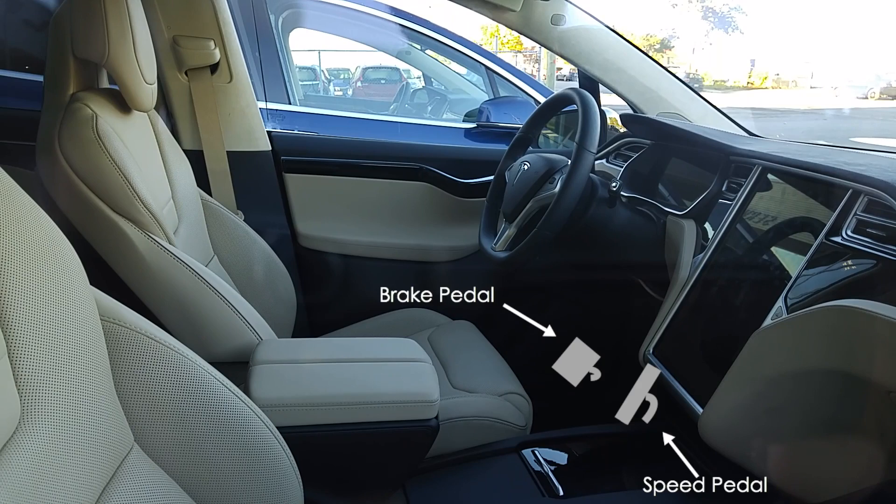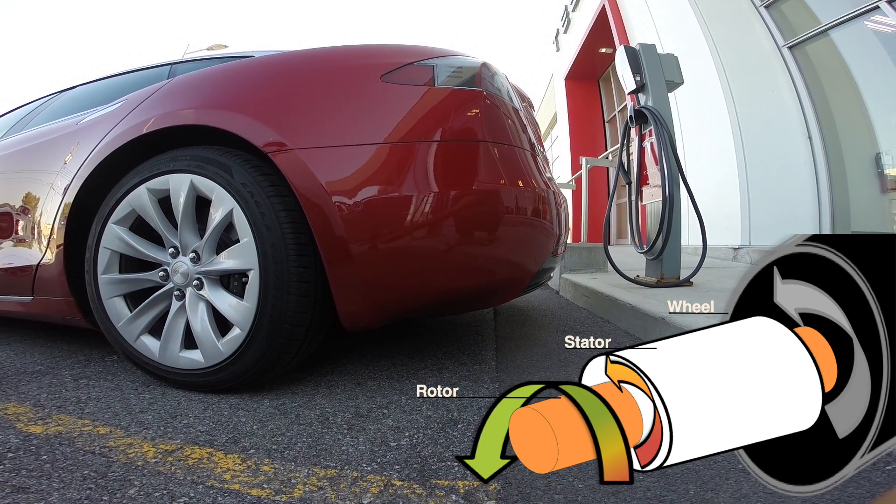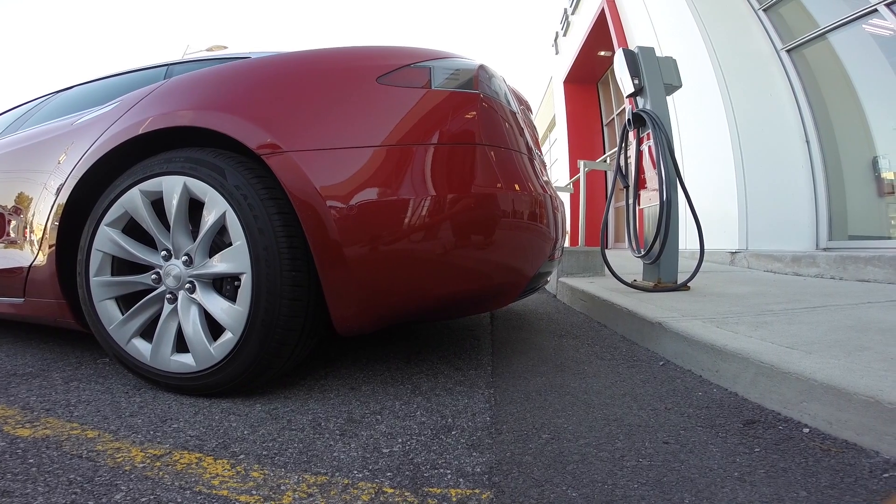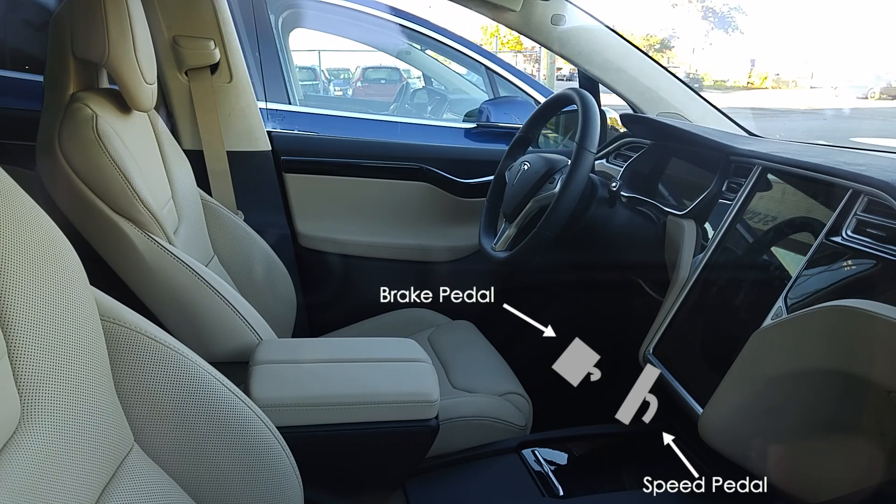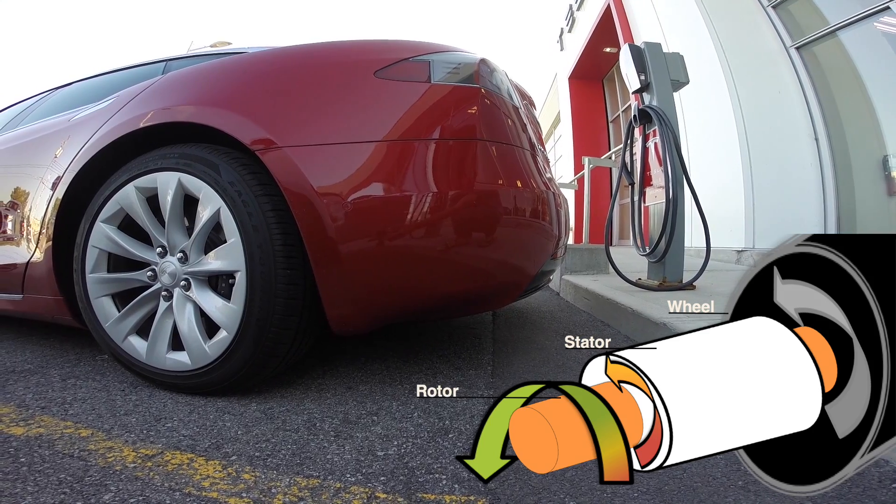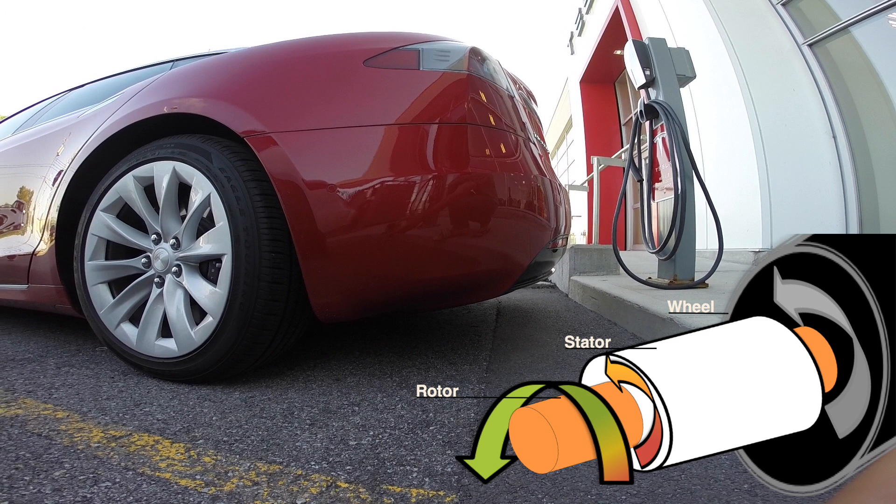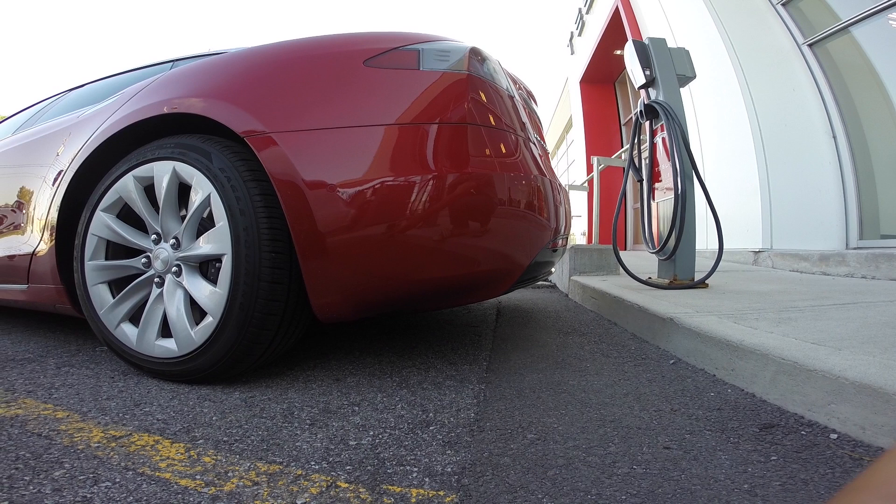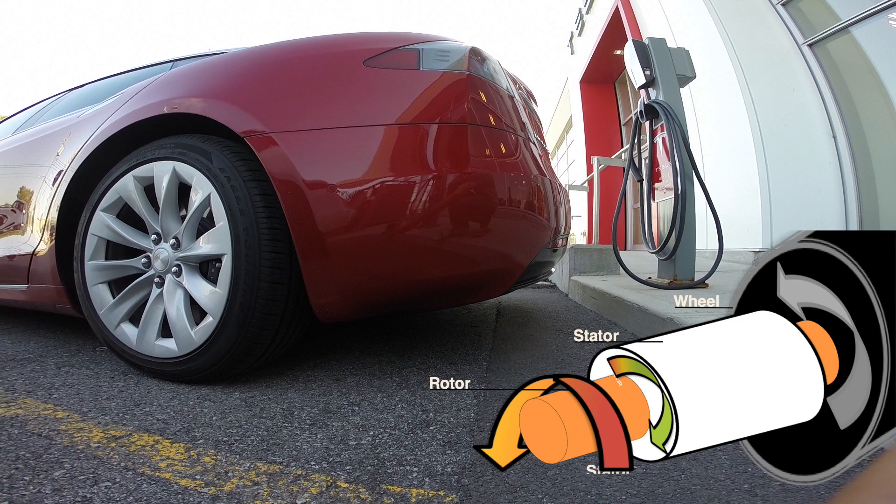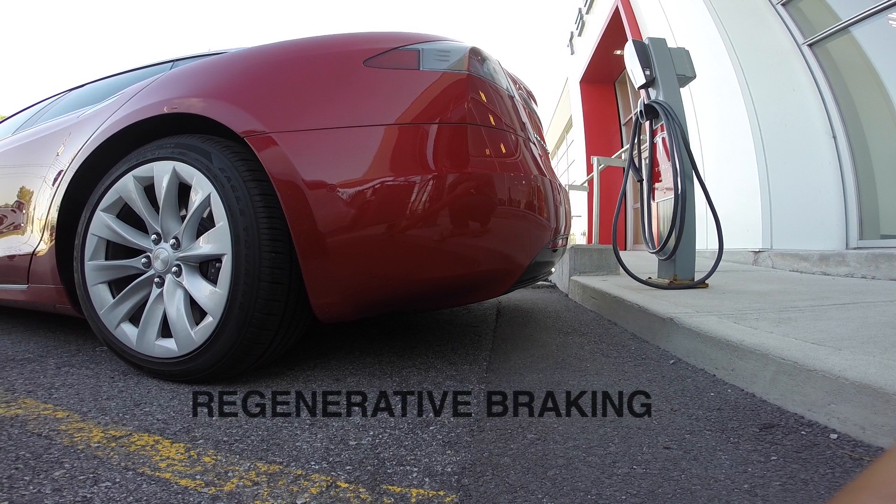When you release the speed pedal, the current sent to the stator is lowered. But since the wheels are still turning, since nobody pressed on the brakes pedal, the rotor is now turning independently of the rotating magnetic field from the stator. When the rotor starts turning faster than the rotating magnetic field out of the stator, now everything works backward. The initial rotating magnetic field is now trying to slow down the rotor. Therefore, the current in the stator is forced to flow in the opposite direction and can be stored back in the battery. This phenomenon is also called regenerative braking.